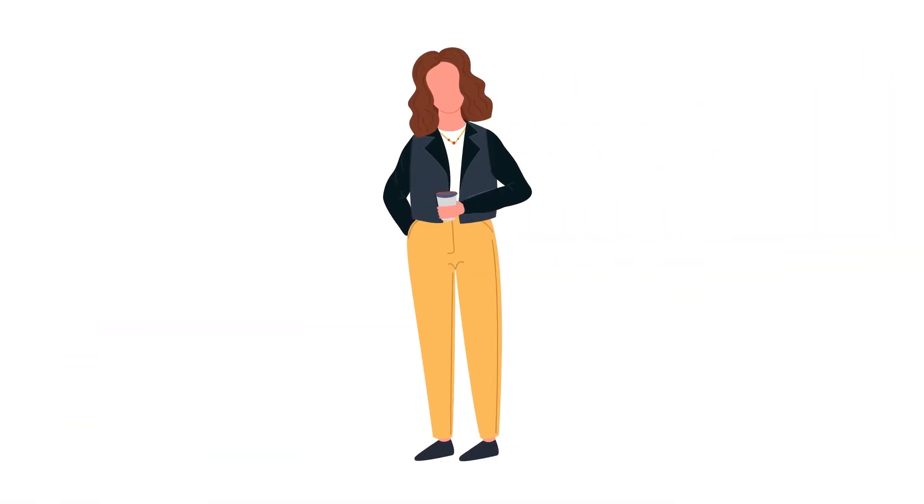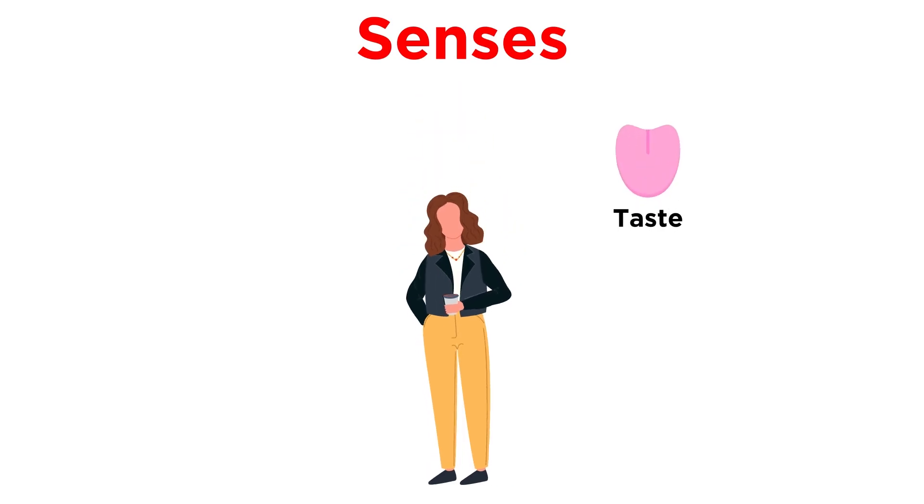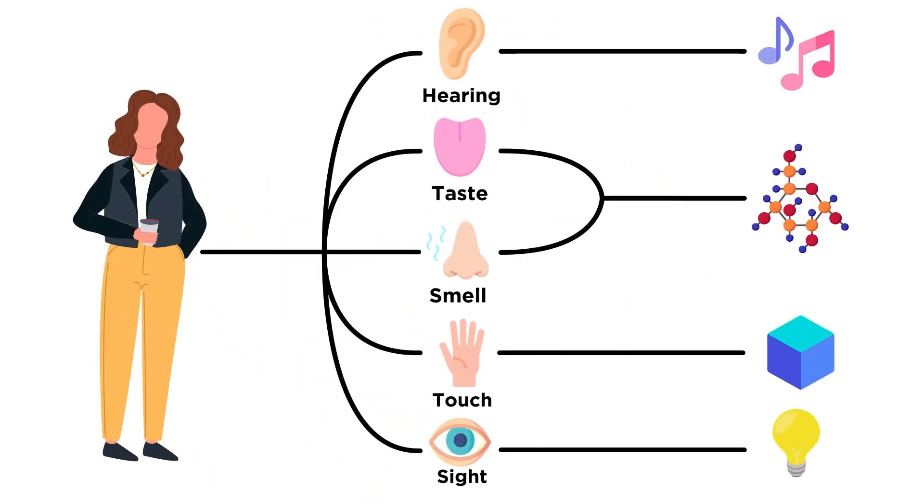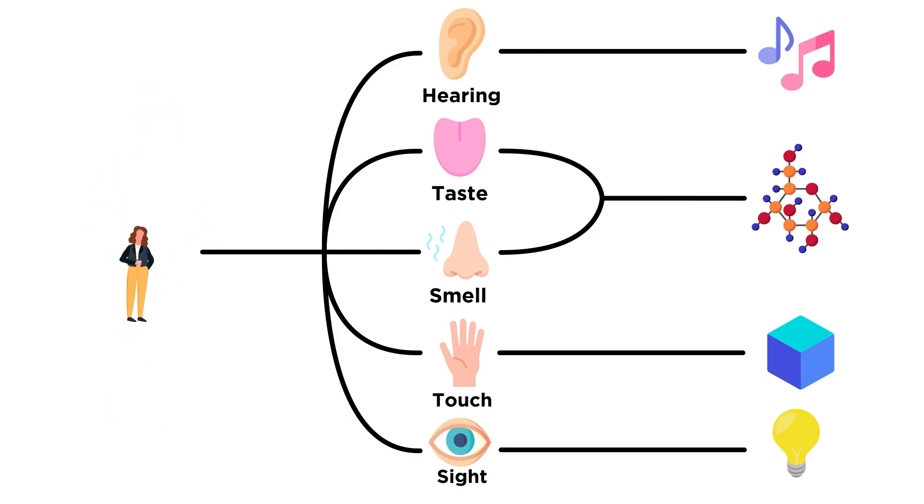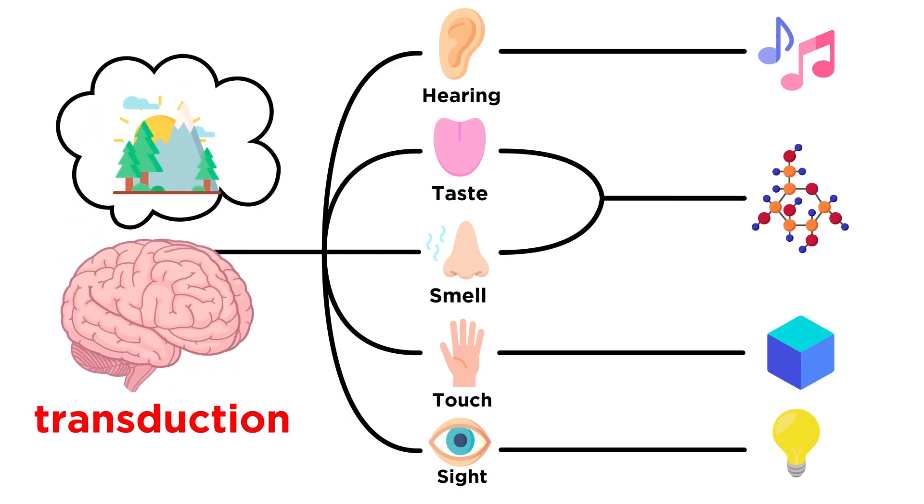We get basic sensory information through our senses: taste, touch, smell, hearing, and vision. This information comes in the form of things like light waves, sound waves, and molecular entities. The brain then transduces this raw information into information that we can perceive.